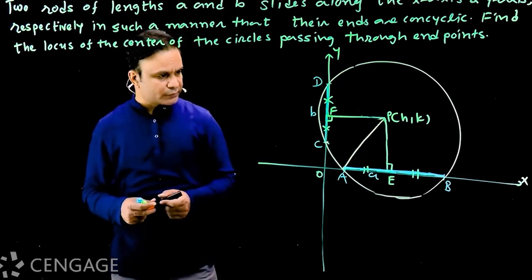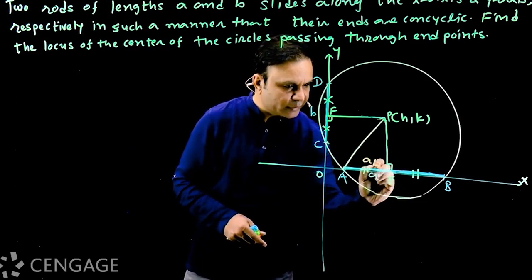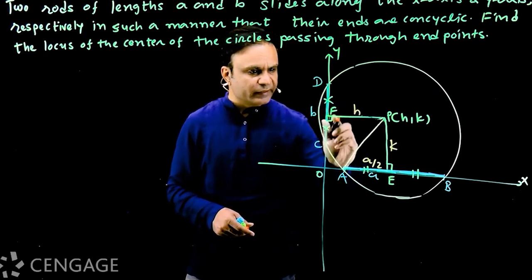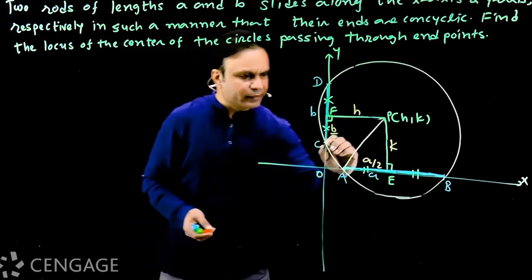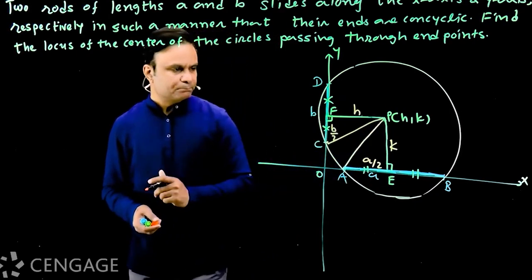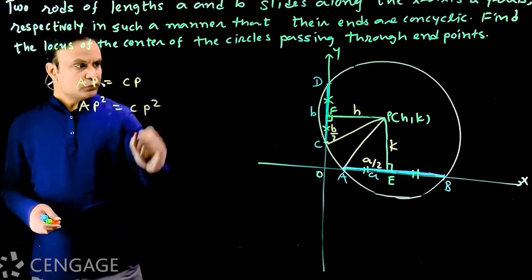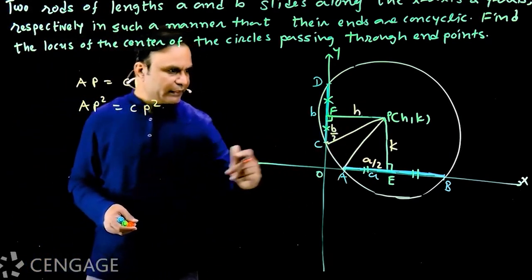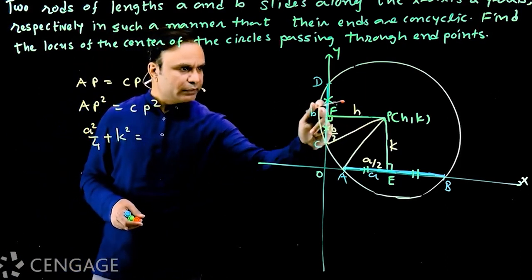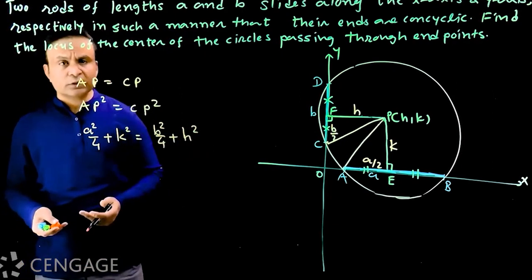How do we get the radius of the circle? The chord AB has length a, so AE = a/2. The y-coordinate of point P is k, and the x-coordinate is h. The chord CD has length b, so CF = b/2. From triangle PAE: AP² = (a/2)² + k² = a²/4 + k². From triangle PFC: CP² = b²/4 + h². Since AP = CP (both are radii), we equate these to get the relation between h and k.